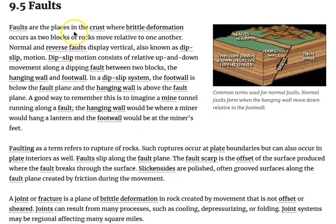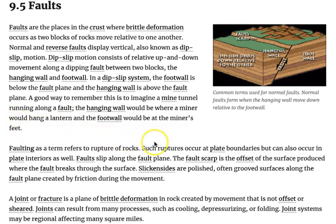Faults are places in the crust where brittle deformation occurs as two blocks of rocks move relative to one another. Normal and reverse faults display vertical, also known as dip-slip, motion. Dip-slip motion consists of relative up and down movement along a dipping fault between two blocks: the hanging wall and the foot wall. In a dip-slip system, the foot wall is below the fault plane and the hanging wall is above the fault plane. A good way to remember this is to imagine a mine tunnel running along the fault — the hanging wall would be where the miner would hang a lantern and the foot wall would be at the miner's feet.